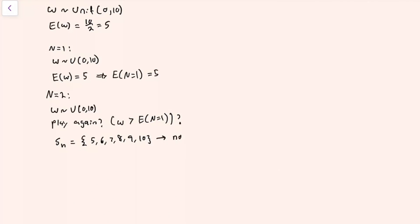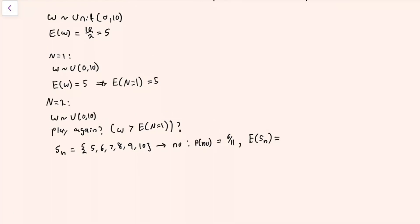This set of values where we stop comprises 6 out of the 11 total values that W could take, so the probability of being in this world is 6 elevenths. If we're in this world where we say no, we could have gotten any of the values in that set. Since those numbers are uniformly selected, we treat the value as uniform from 5 to 10, so the expected value is 10 plus 5 over 2.